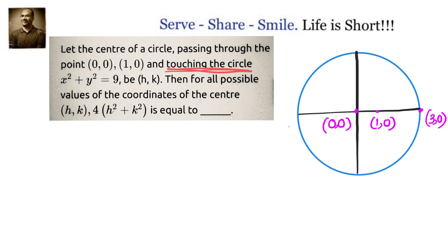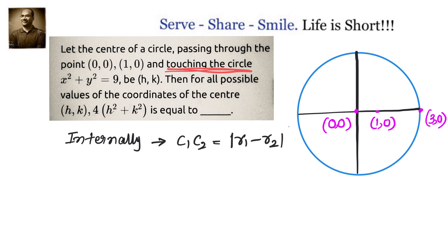From the diagram we can clearly see that if a circle is passing through (0,0) and (1,0) and touching another circle with equation x² + y² = 9, then they should be touching each other internally. In the case of circles touching internally, the distance between the centres is the absolute value of the difference of their radii. So let us find c1, c2, r1, and r2.